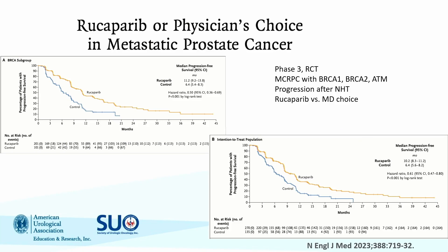The phase three follow-up TRITON3 trial evaluated rucaparib for patients with BRCA1/2 or ATM mutations and prior novel hormonal therapy, without requiring prior taxane exposure. The trial was two-to-one rucaparib versus physician's choice, with the primary endpoint of radiographic progression-free survival. Results favored rucaparib in all comers, but we see particularly strong results for patients harboring the HRR mutation — reinforcing the theme that patients with these mutations do better with PARP inhibitors.